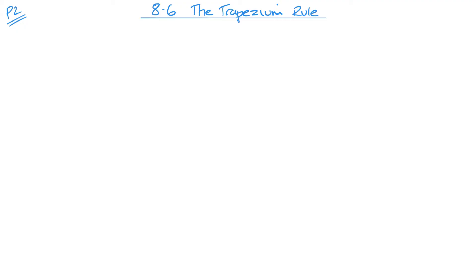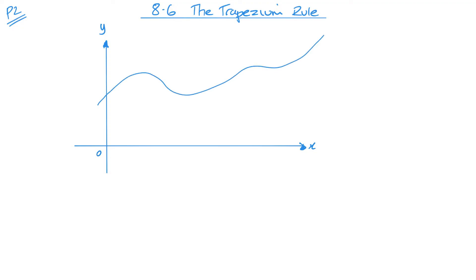Welcome to P2. Today we're going to look at the trapezium rule. The trapezium rule is for when I want to integrate something — I need to find the area under a curve but I'm unable to integrate it algebraically. It's too difficult, or in P2 it might be an integration you haven't learned yet. In general it's a much more difficult one, and what we can do is use the trapezium rule to get an approximation for the area under that curve.